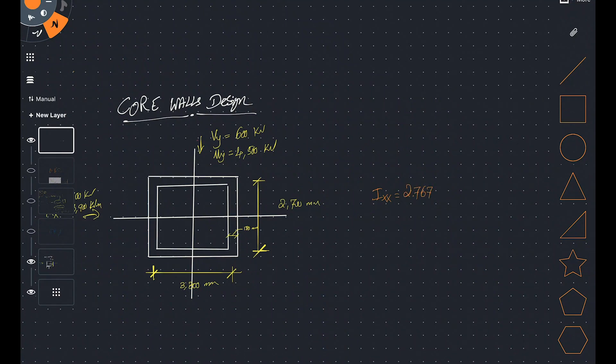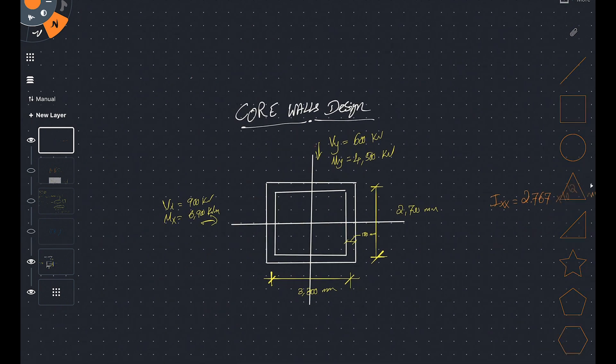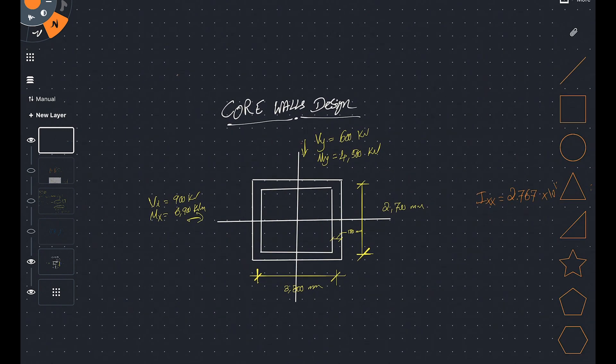Hello and welcome to part 3 of our core wall design series. Now let's start looking at the shear flow in our section, which is the method that we use to calculate how much shear force is going between the joints of the core wall.